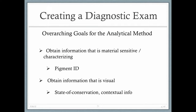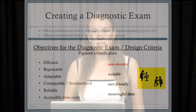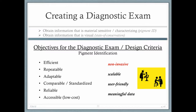When creating a diagnostic exam, we want to achieve concrete goals. First is to obtain information that's material-sensitive and characterizing — this will help us make a pigment identification. Second is to obtain spatial and visual information showing where materials are distributed throughout the artwork, capturing state of conservation and contextual information. But we also have to ensure it's an exam in the true diagnostic sense — efficient, repeatable, adaptable, comparable, and standardized — a reliable way to determine the artist's palette that is accessible, user-friendly, and creates meaningful data.